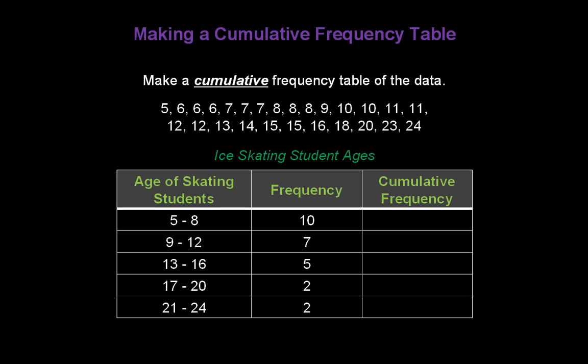The first row, the 5 to 8 year olds, there were 10 of those. So our cumulative frequency so far is 10. Now, we go down to the next row. We have the 10 from the first row plus the 7 from this row for a total of 17. We take that 17 and add it to the 5 from the next row for a total of 22. See how easy it is to make a cumulative frequency table?